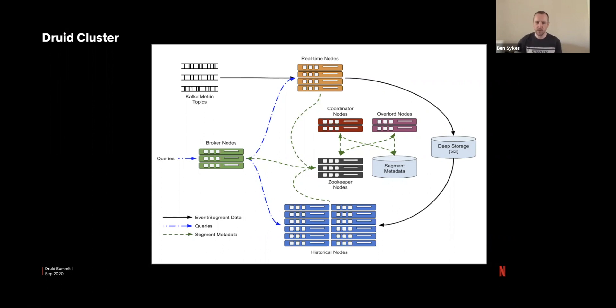So we have our real-time nodes, our broker nodes, historical nodes, coordinators, zookeepers, and overlords all on separate instances and all in separate ASGs within Amazon.